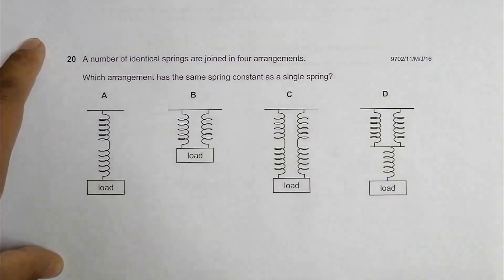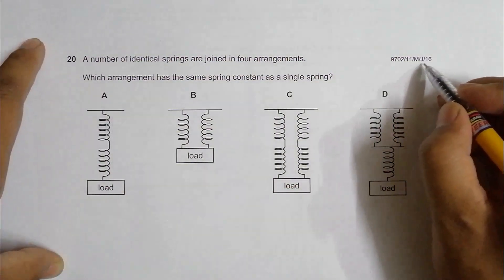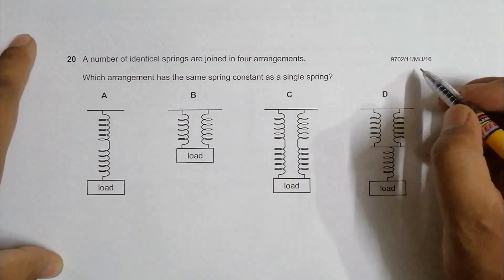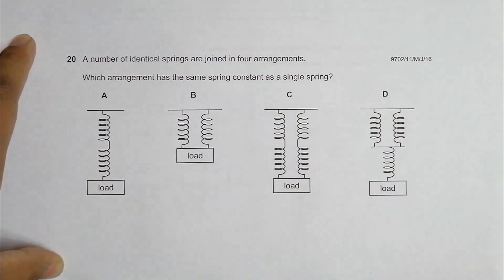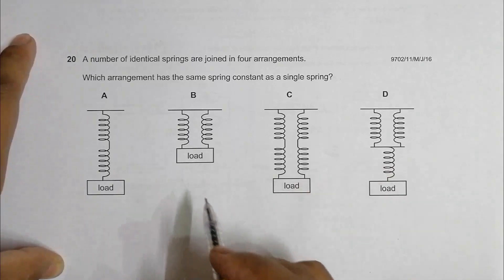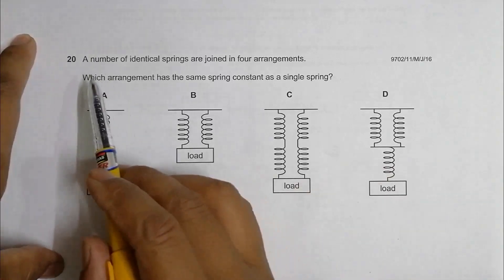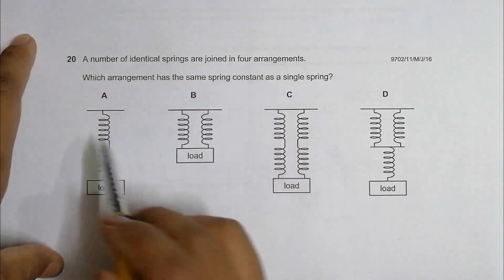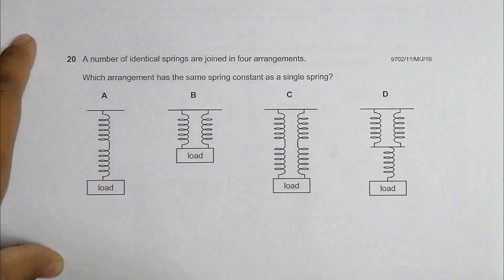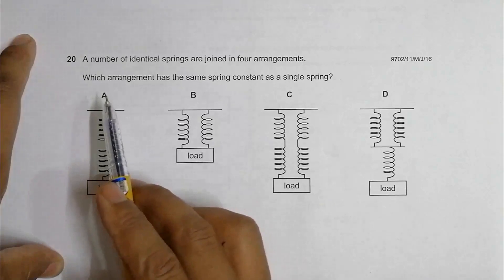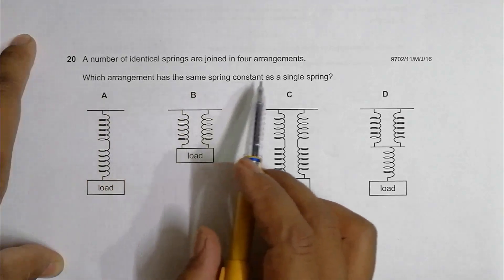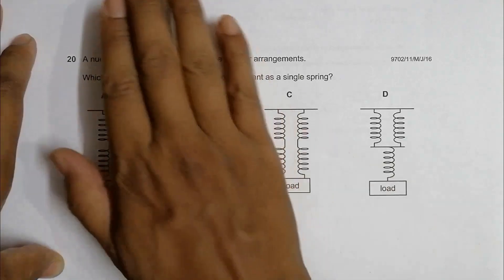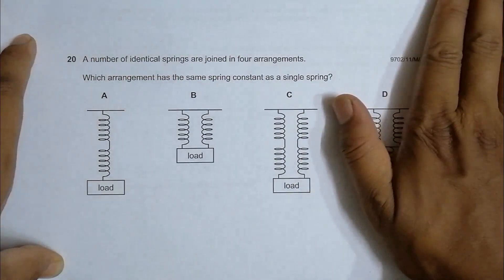Hello folks, this is a 2016 major paper question. The chapter is deformation of solids and it's about springs. As you can see from the diagram, a number of identical springs are joined in four arrangements. The question is which arrangement has the same spring constant as a single spring.